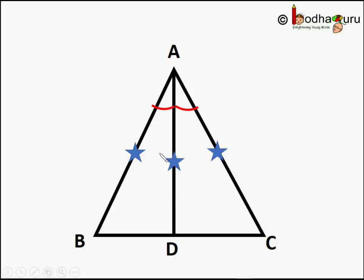AD is the common side. And angle BAD is equal to angle CAD. Because we draw the bisector of angle A. So triangle BAD and CAD are congruent triangles.